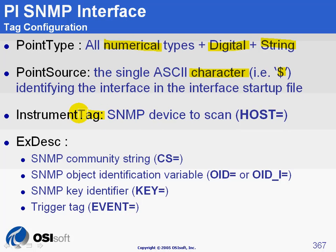The two important attributes are instrument tag and the extended descriptor. They contain keywords, and in some cases when there are multiple keywords in the same attribute, they are separated by semicolons. Instrument tag contains 'host=' and then the IP address or the name of the device you want to scan. The extended descriptor contains the password — 'CS' which stands for community string equals, and then the password.